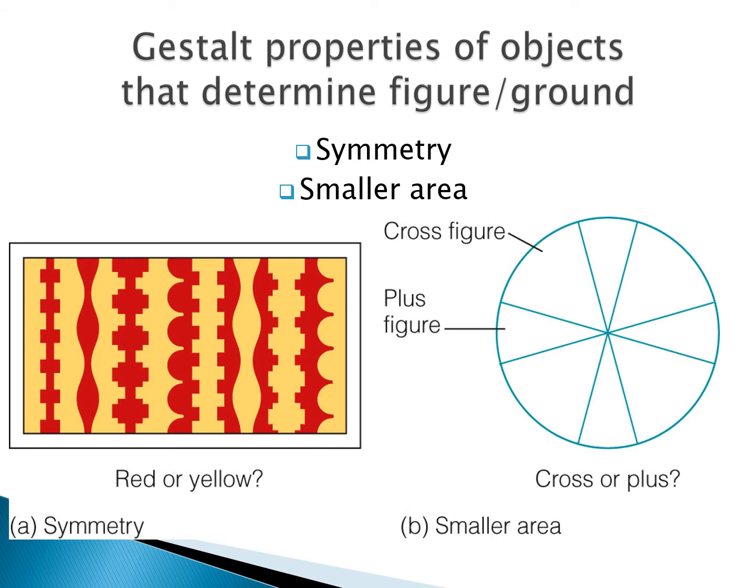Starting with symmetry: if I ask you in A, what is the figure — red or yellow? Usually I get about half the people saying red and half saying yellow, and someone will say it's weird, it changes. Symmetry is pretty strong and it usually works. Most of us on the left take the symmetrical red areas as figure, and then it flips to where on the right side, what is symmetrical is the yellow.